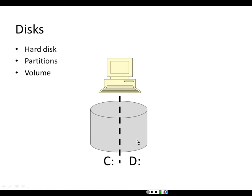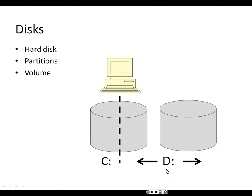The difference between a volume and a partition is best seen when you implement disk spanning. Disk spanning is where one logical D drive is stretched across separate partitions. So the volume is the thing that gets the drive letter. A volume might occupy a single partition or be stretched across two partitions on separate hard disks.